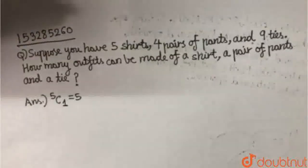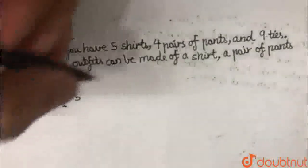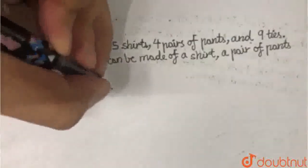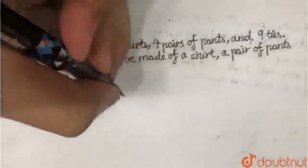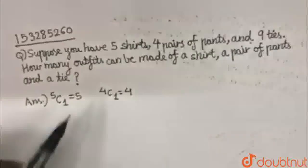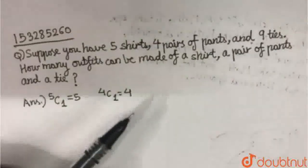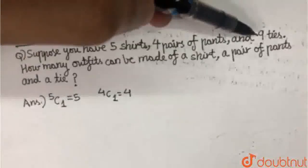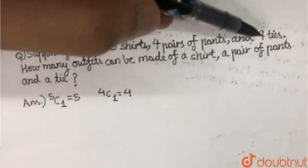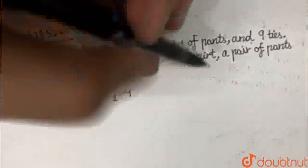The way of choosing a pair of pants from 4 pairs of pants, this is 4C1, which is 4. And the way of choosing 9 ties, the way of choosing 1 tie from 9 ties.